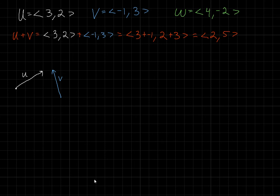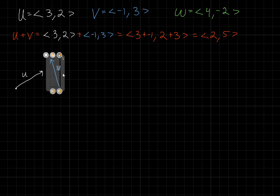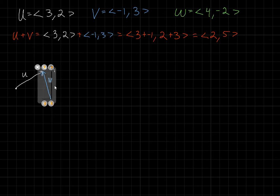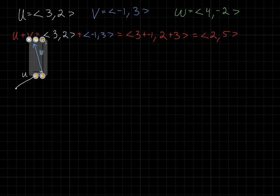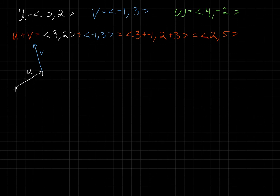Here's the trick to adding vectors graphically. I'm going to teach you a method called the head-to-tail method. You draw your first vector and look at the head of that vector — the head of u is right here. I'm going to take the tail of v and put it on that head, hence the name head-to-tail method. My resultant vector is drawn from the very initial point to the very terminal point, and your vector always goes from tail to head. This is me adding u plus v graphically.